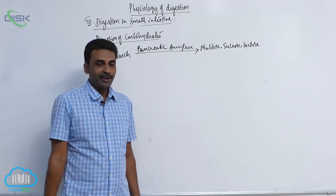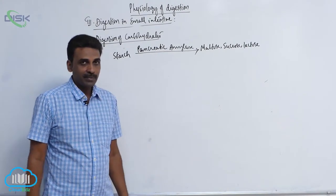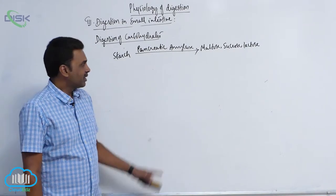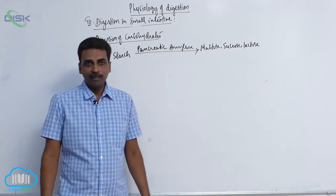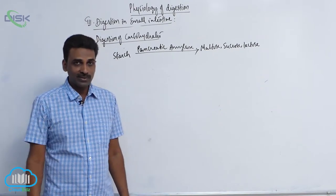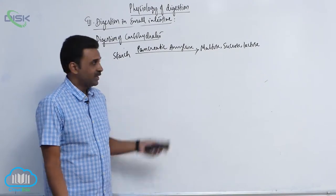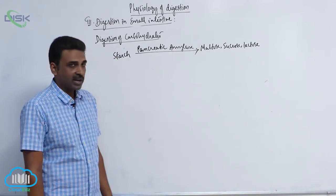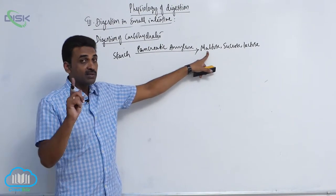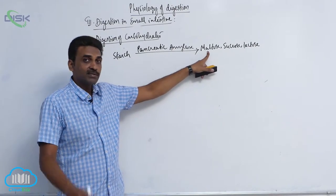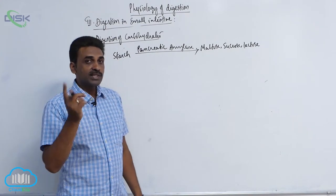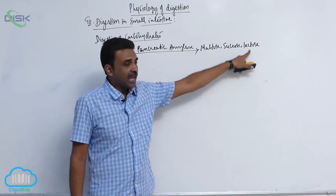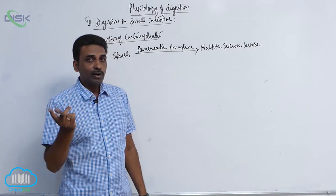Pancreatic amylase is the major amylase in humans. It acts on starch and converts it into disaccharides — maltose, sucrose, and lactose. Pancreatic amylase works in alkaline medium (above pH 7), while salivary amylase works at pH 6.8. Maltose contains two units of glucose; sucrose contains one glucose and one fructose; lactose contains one glucose and one galactose.